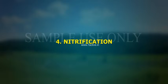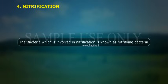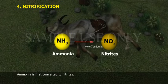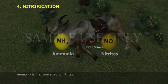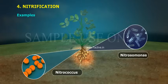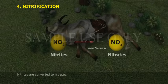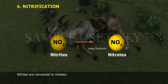4. Nitrification. The bacteria involved in nitrification are known as nitrifying bacteria. Ammonia is first converted to nitrites. Examples: Nitrosomonas, Nitrococcus. Nitrites are then converted to nitrates. Examples: Nitrobacter.